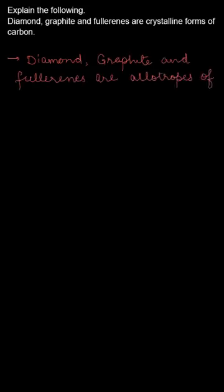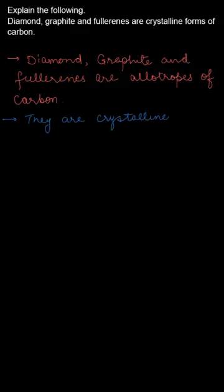Now what is crystalline form? In crystalline form there is a regular arrangement of atoms, that is there is a definite arrangement. So we can say that these three are crystalline forms of carbon.